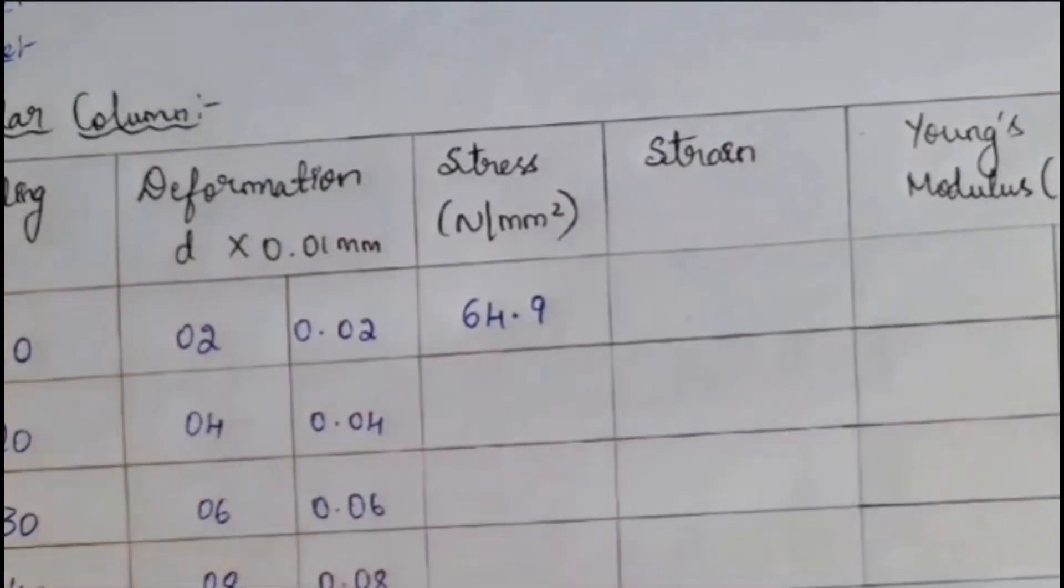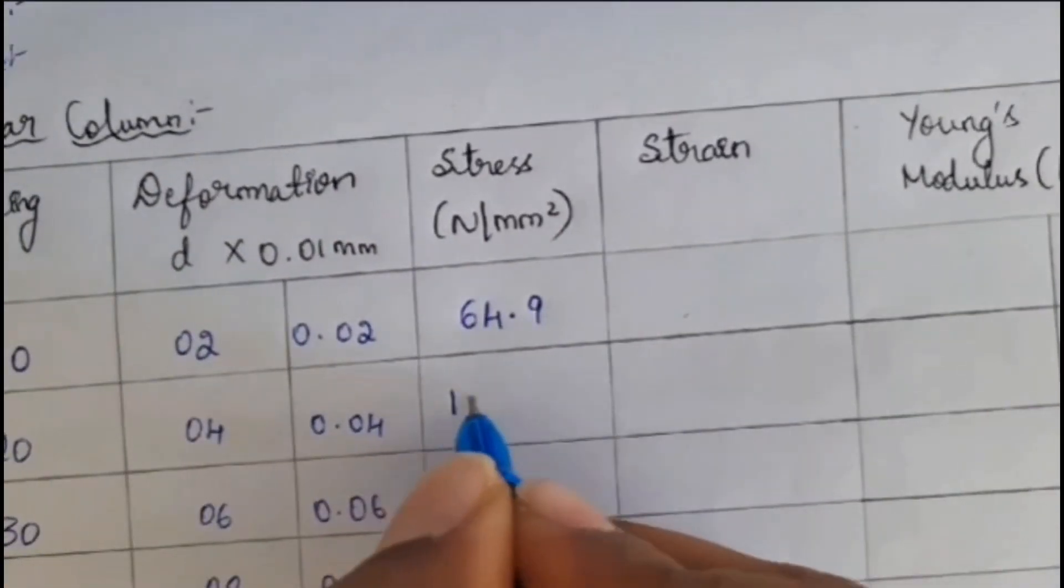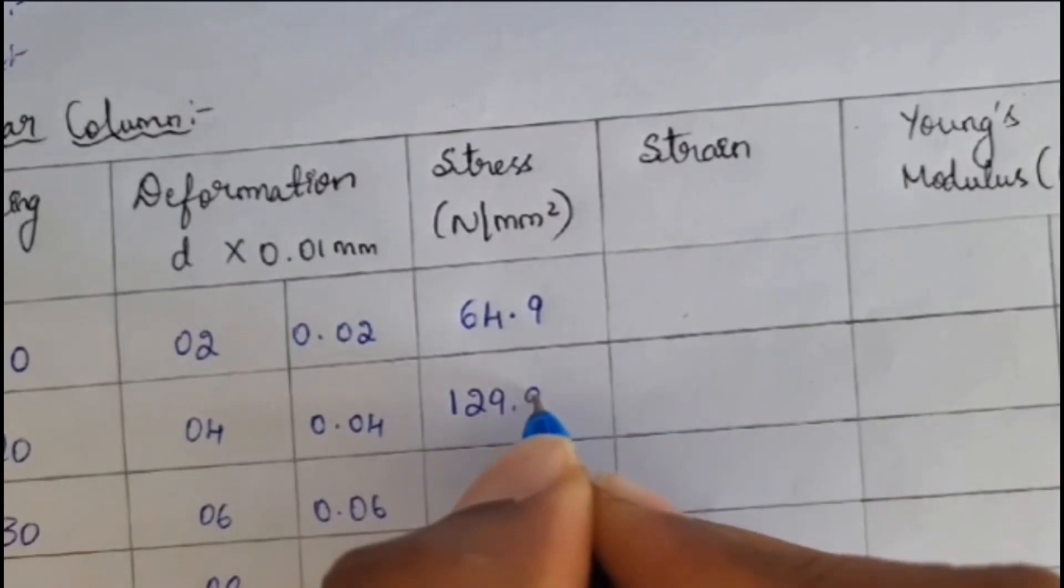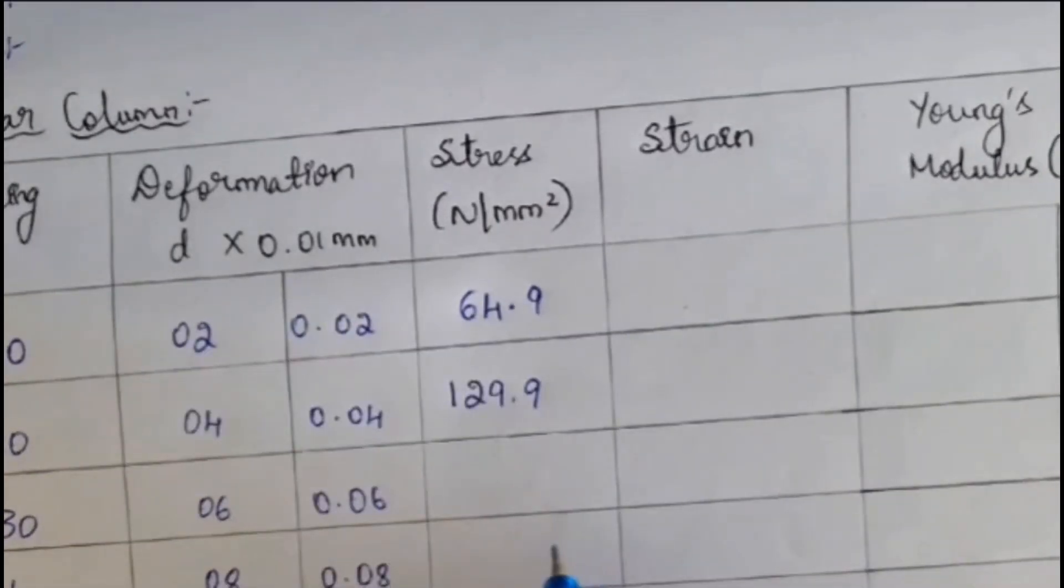So, same like that, we will be making for second one also. So, for that, we will be getting 129.9. For example, same like that only. 20 kilo Newton. That is, 20 into 10 to the power of 3 divided by 0.04. For that, we will be getting the value as 129.9. Same like that for third one also.